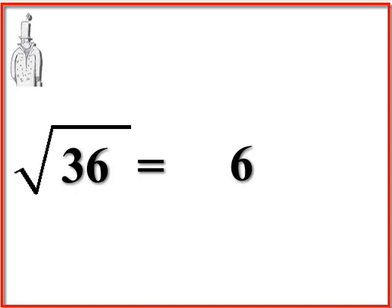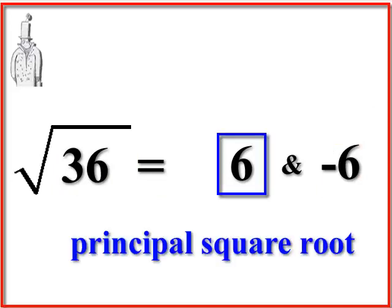But very important: anything that you take the square root of has two values, a positive value and a negative value. So remember, negative 6 times negative 6, they're the same number, and when you multiply them you get a positive 36. So there's always two values for the square root of anything.